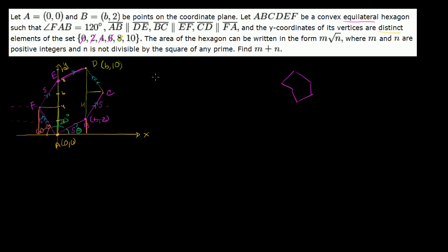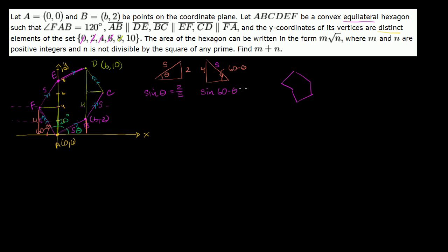We know that side AB travels up 2 vertically and side FA travels up 4 vertically, and s is the hypotenuse of both right triangles. From the right triangle for AB: sin(θ) = 2/s. From the right triangle for FA: sin(60° − θ) = 4/s. Multiplying the first equation by 2: 2·sin(θ) = 4/s, so we can set 2·sin(θ) = sin(60° − θ).